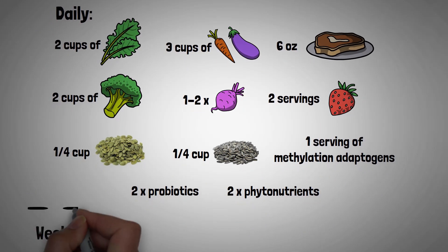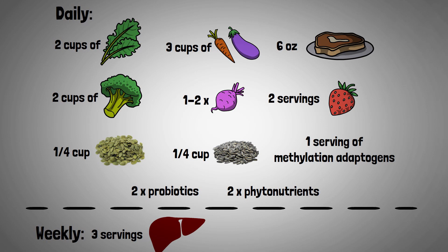Now, every week they were also including nutrient-dense animal products, such as 3 servings of liver per week and 5-10 eggs per week.